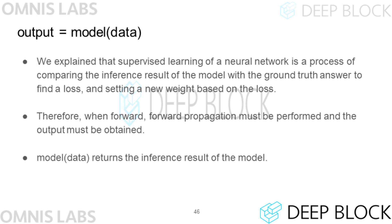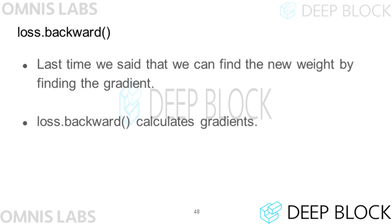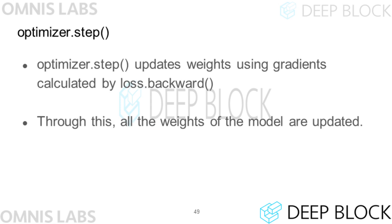When you put an input into the model, the model returns an output — that means forward propagation is performed. After that, the gradient is obtained by comparing the output with the target, and the weights of the model are adjusted during backpropagation. The negative log likelihood loss function is the same as the sparse categorical cross-entropy loss function in Keras. By getting output and target as arguments, this function calculates the loss. The loss.backward method finds the gradient, and optimizer.step updates the weights of the neural network based on the gradient obtained through loss.backward.